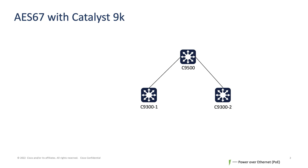Let's take a quick look at the demo to see how you can onboard AES67 streams onto a network designed with Catalyst 9000 switches to build a wireless intercom system. For this demo, we are using two Catalyst 9300 switches where we have RIDL endpoints connected, and a Catalyst 9500 switch which is acting as an aggregation switch.